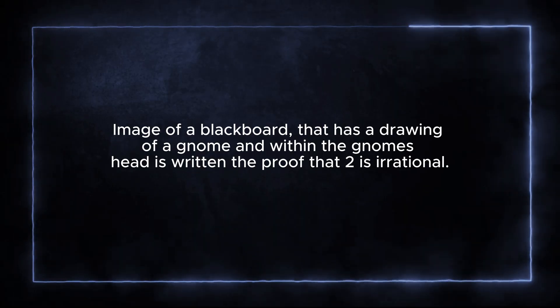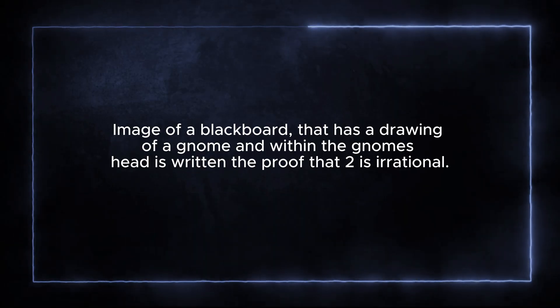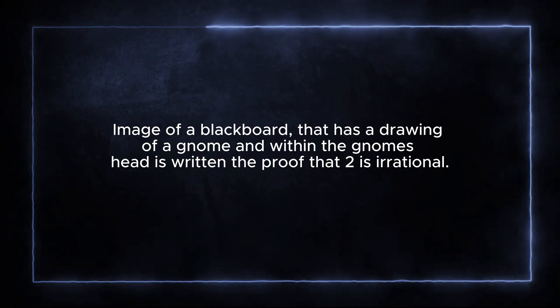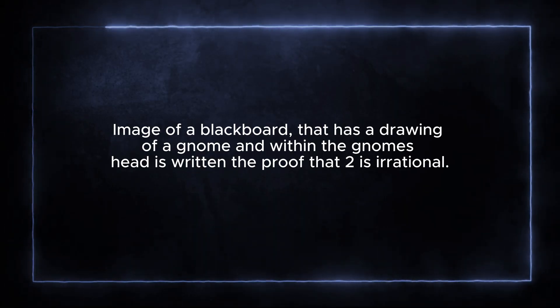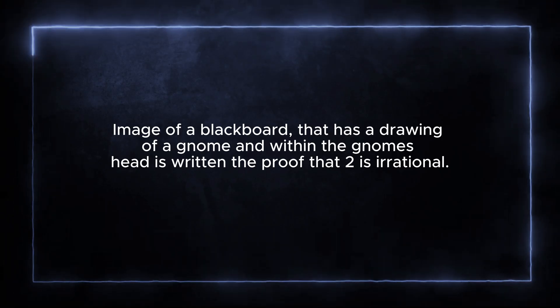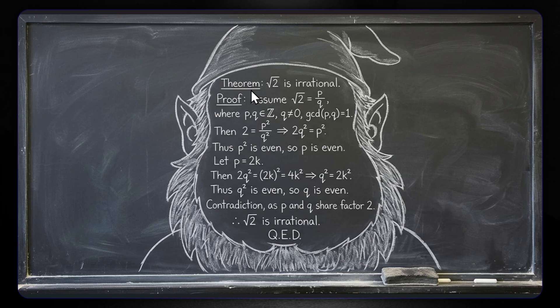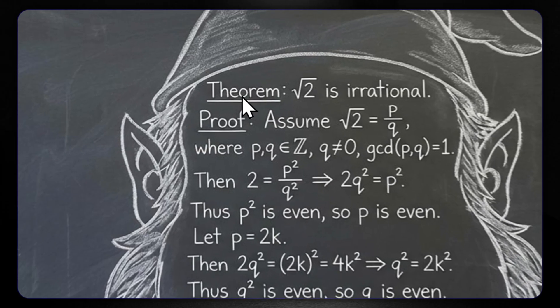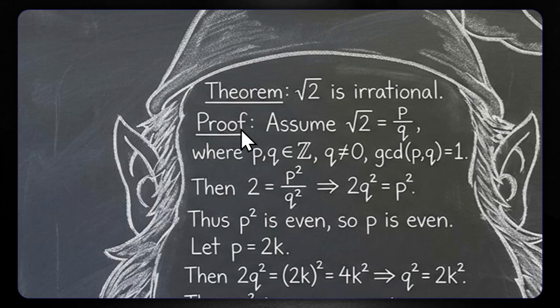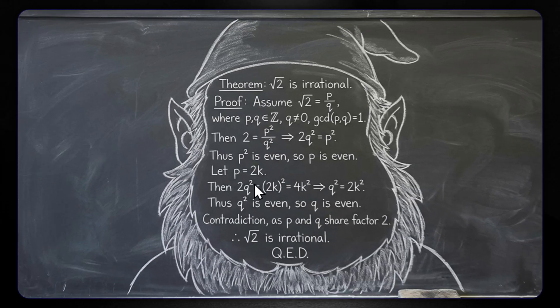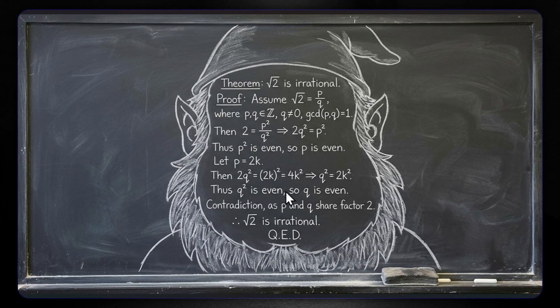Let's try this prompt: an image of a blackboard that has a drawing of a gnome, and within the gnome's head is written a proof that √2 is irrational. This looks extremely good. Here is the theorem, here is the proof, and everything looks perfect.